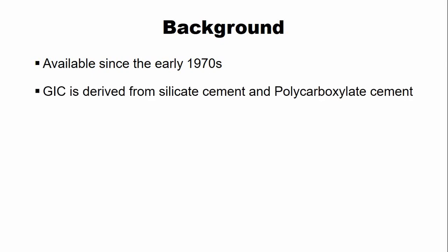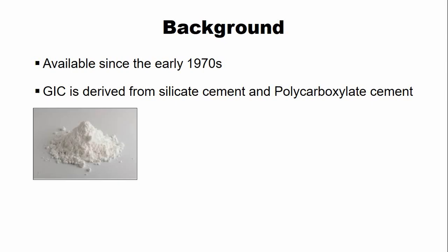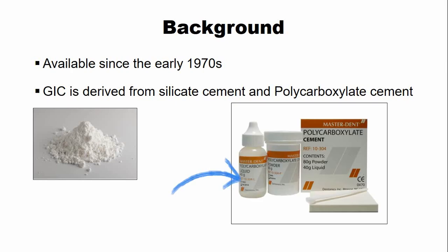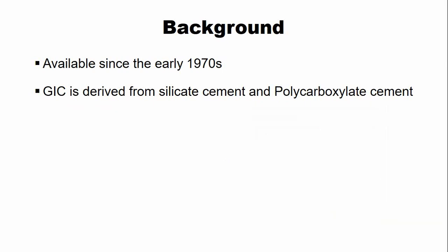The glass ionomer cement has been available since the early 1970s and is still in use — making it one of the oldest and most popular dental cements. Glass ionomer cements are derived from the silicate cement and the polycarboxylate cement. The powder of the silicate cement, which is an ion-leachable glass, combined with the liquid of the polycarboxylate cement produces the new cement called glass ionomer cement.